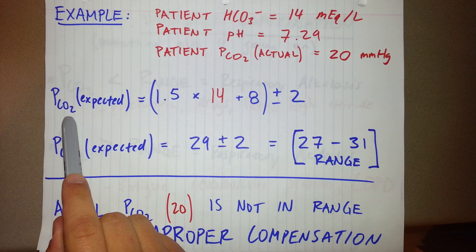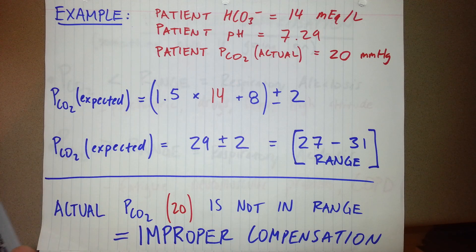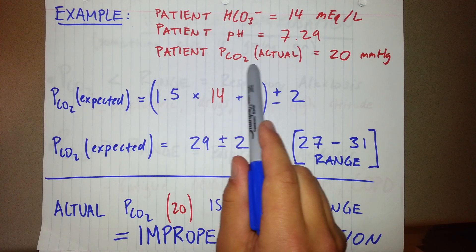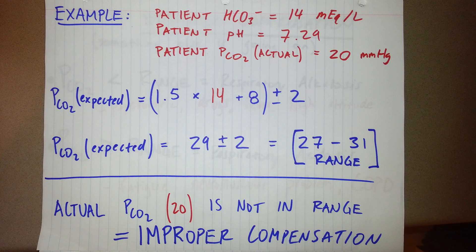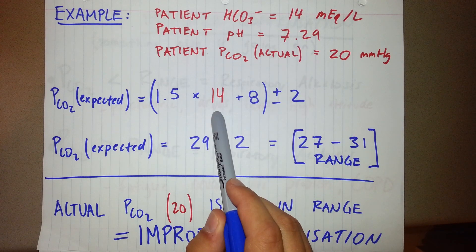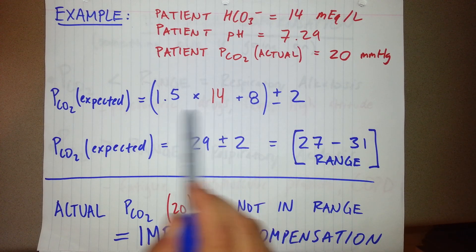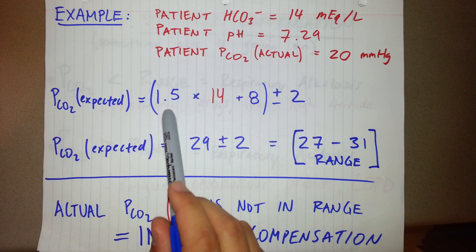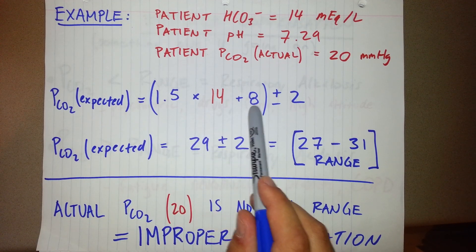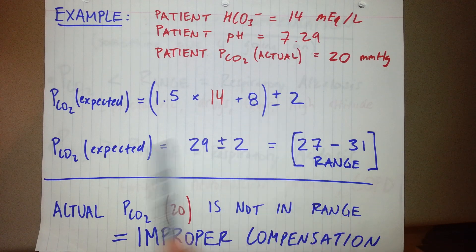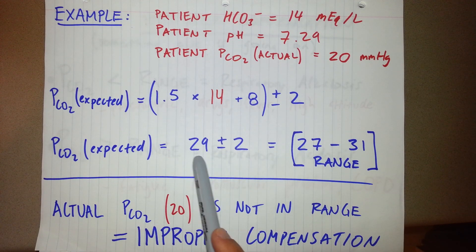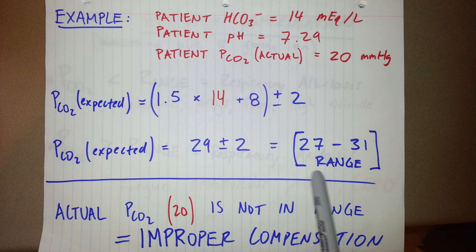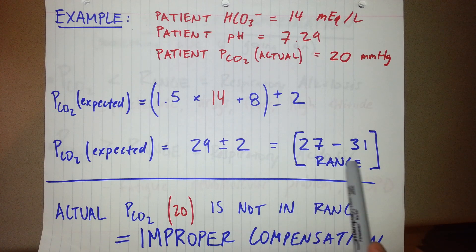Here we use Winter's formula to determine the expected range of what that CO2 should be if it's properly compensated. So you can see I input the 14 for the bicarbonate level here into the equation. The expected partial pressure of carbon dioxide is 1.5 times 14 plus 8 plus or minus 2. And that simplified is 29 plus or minus 2, or gives us a range of 27 to 31.